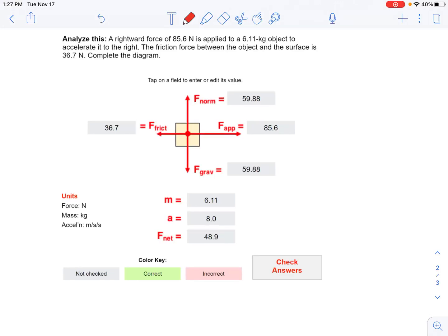Now we have a situation where we have multiple forces acting horizontally. We're given that there's a rightward force of 85.6 Newtons, the mass is 6.11 kilograms, and the frictional force between the surface is 36.7 Newtons. First thing I would do is once again figure out the gravity—that's a common thing to just go ahead and figure out.